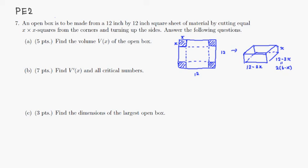Okay, let's look at the practice exam 2, problem number 7. So what we're doing is that start with a square piece of material and take x by x square from all four corners, then fold these side walls up to make an open box like that.